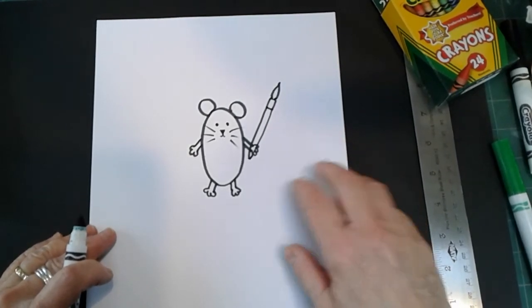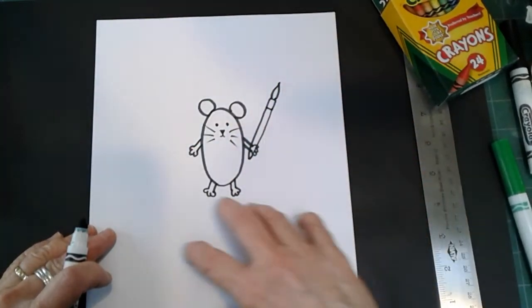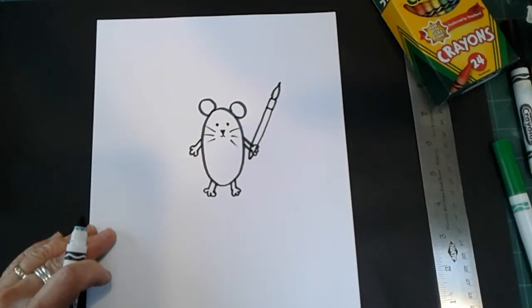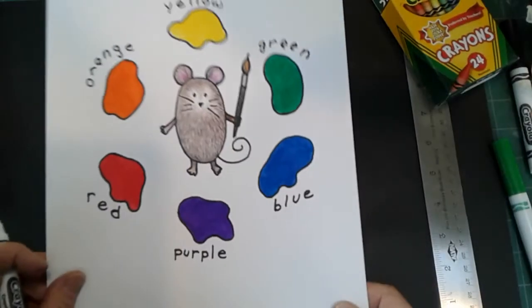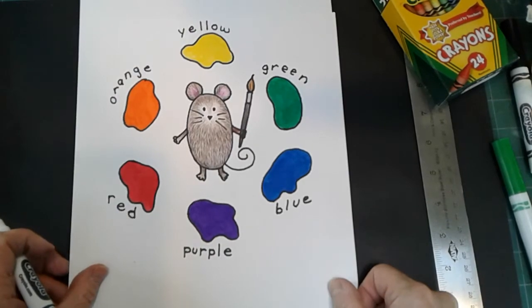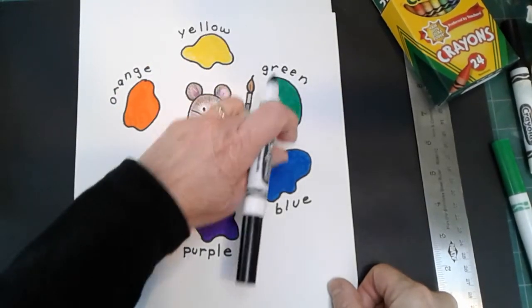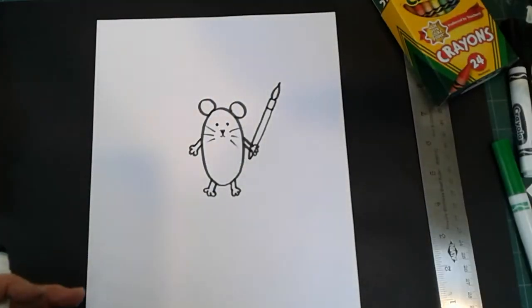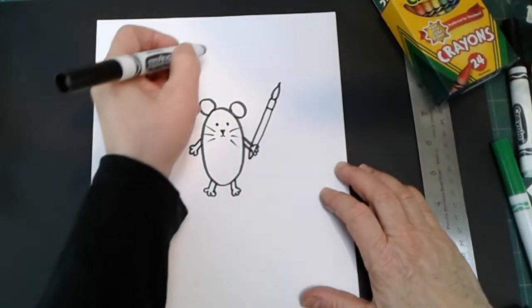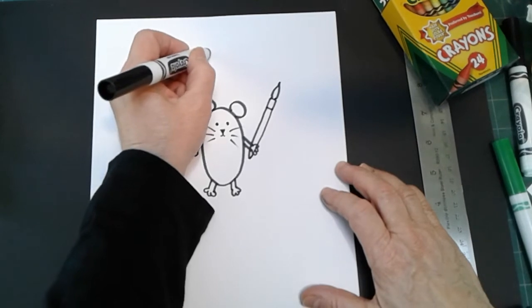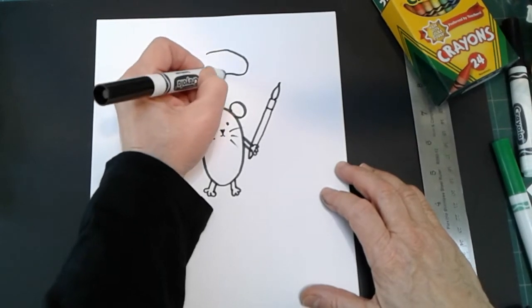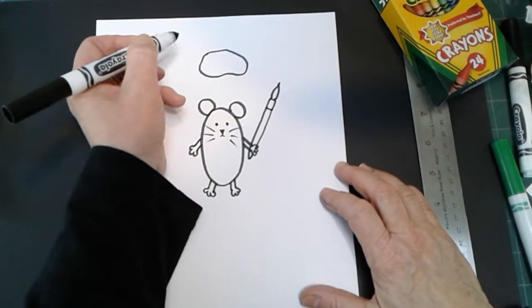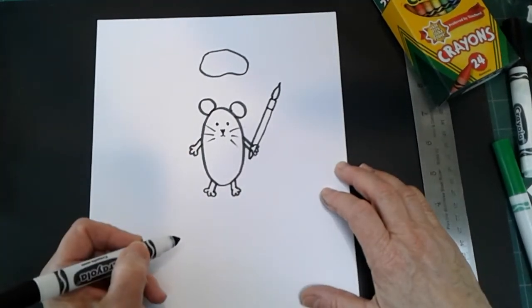Now, surrounding our mouse, we're going to have six shapes that look like little puddles of paint. One, two, three, four, five, six. So let's make six wiggly, organic-type shapes around our mouse. Anything goes here. I'm going to make the top one first.